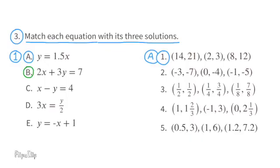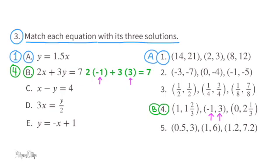B: 2x plus 3y equals 7. Substitute negative 1 for x and 3 for y: 2 times negative 1 plus 3 times 3 equals 7. Negative 2 and positive 9 gives 9 minus 2, which is 7. I used the ordered pair negative 1 and 3 from number 4. All the other ordered pairs in number 4 also work. Equation B is a match with the number 4 solutions.